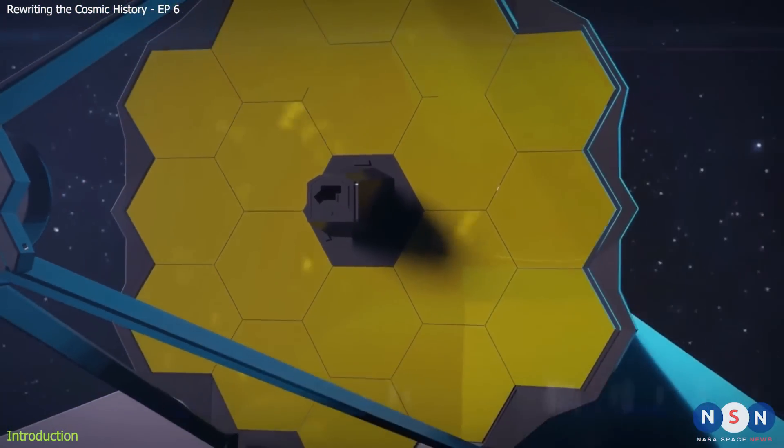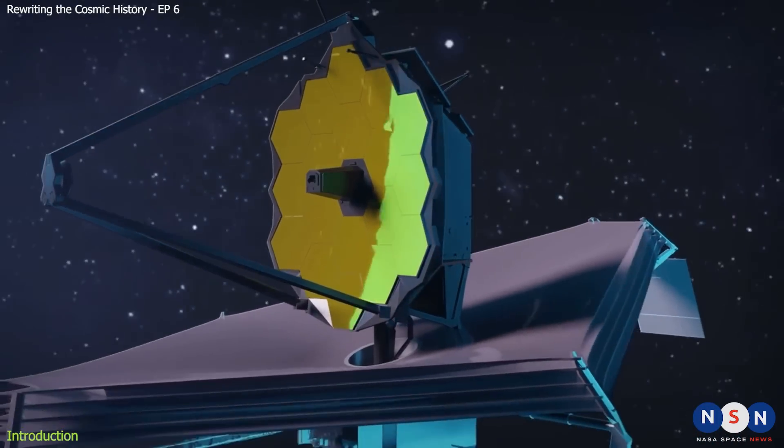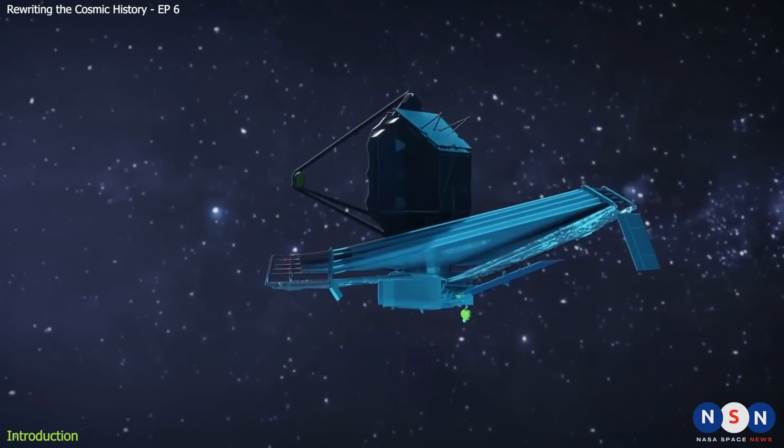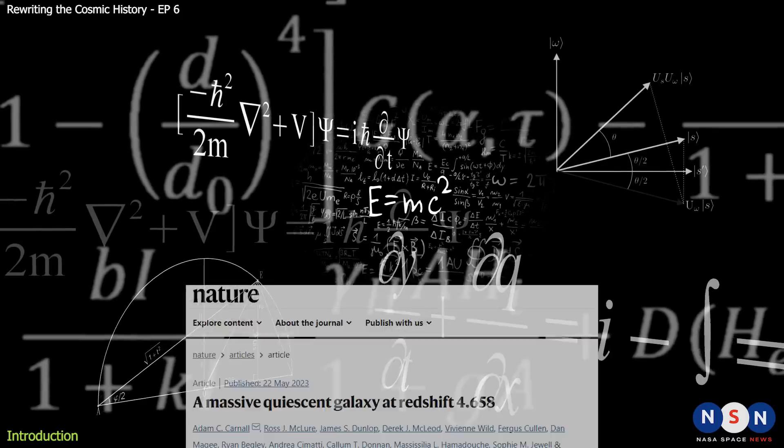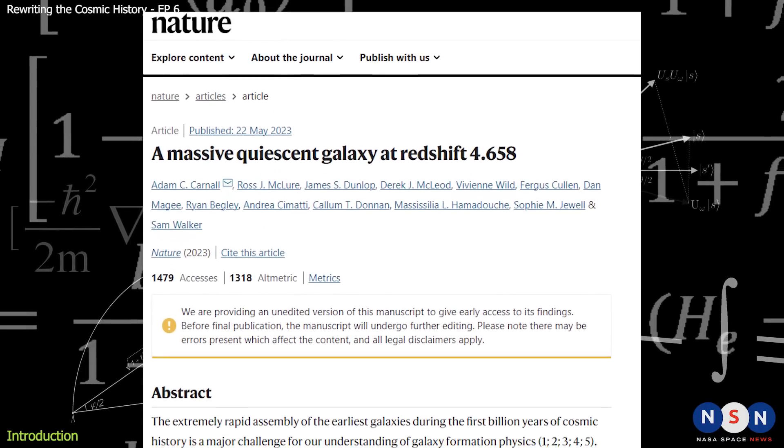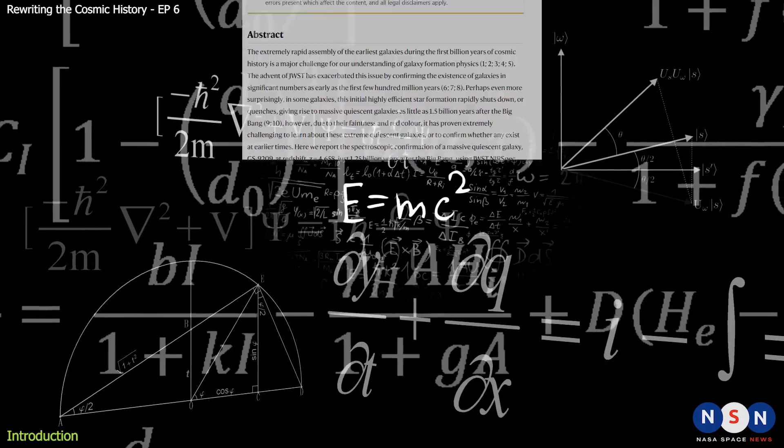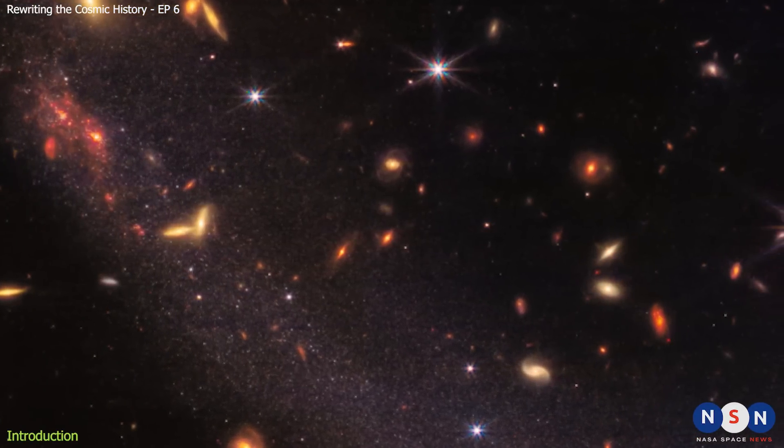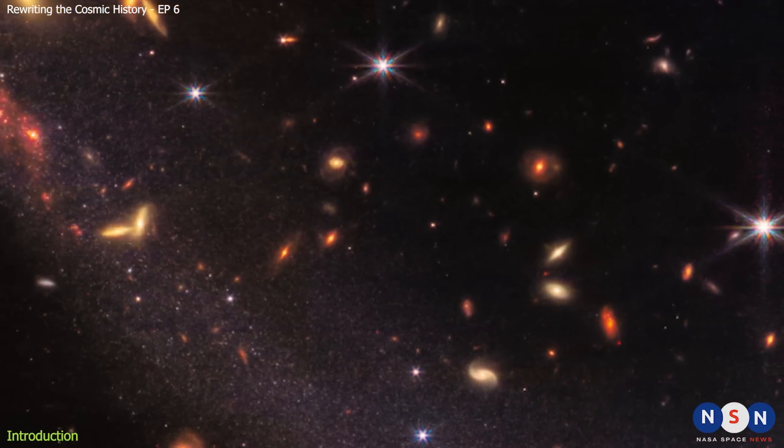It was discovered by the James Webb Space Telescope, the most powerful telescope ever built, which can see things that no other telescope can see. This study, which was published this month in the journal Nature, is based on data from the James Webb Space Telescope, which is designed to observe the infrared light that comes from the most distant and oldest objects in the universe.